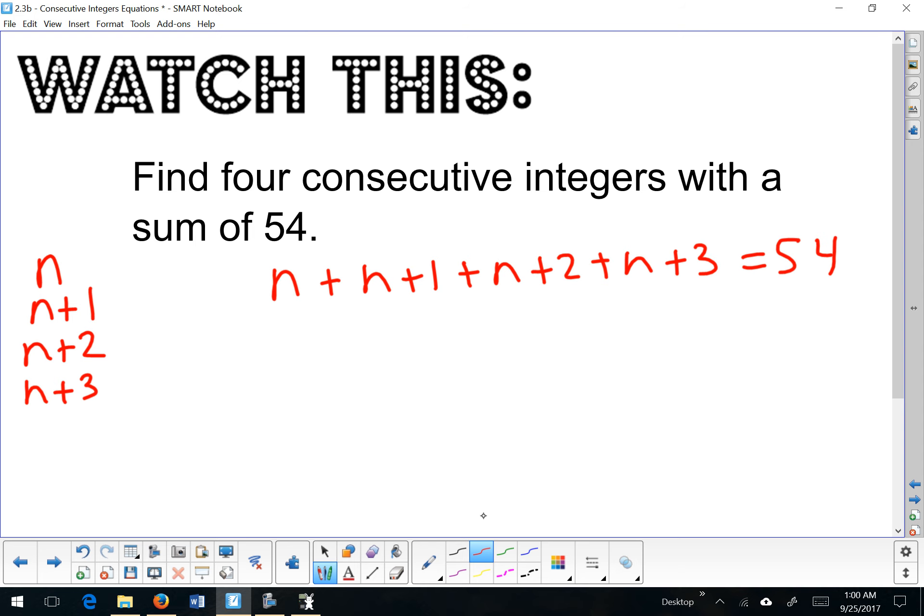Some people put parentheses around each of these values just to represent that they are first, second, third, and fourth, but they're not necessary. Either way, you can still combine all of these like terms. So I have four n's here, n plus n plus n plus n. So I have four n's, and I have 2, 3, 4, 5, 6 as my constant.